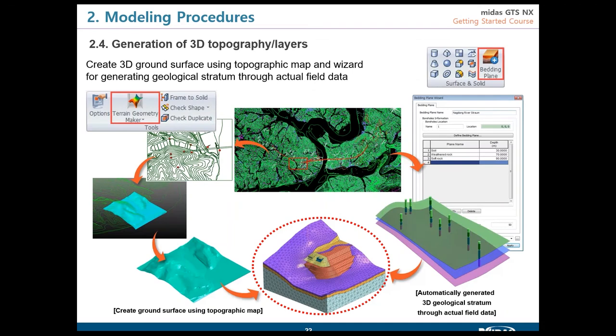The next step covers generation of 3D topography layers and boreholes. There are two features: one creates a ground surface from a map, and the bedding plane wizard creates strata through actual field data. Let's take a look at how to do that.